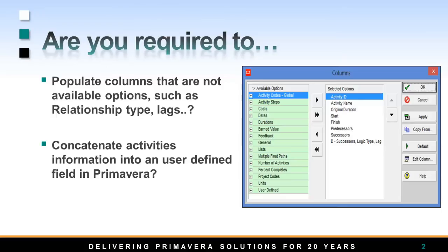How can we streamline the process for getting all the data we need? With Emerald P6 Loader, we can surely achieve this goal. We can bring any activity data from the details window and bring it back into Primavera in the ways we need.